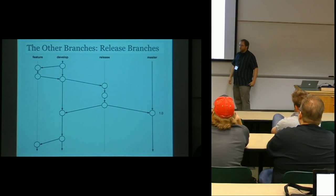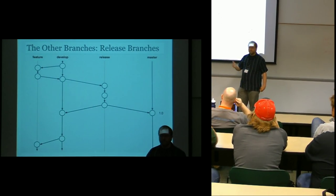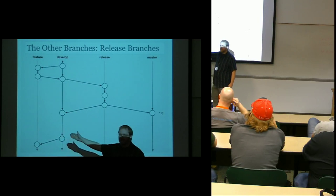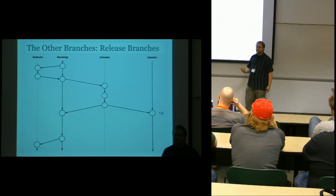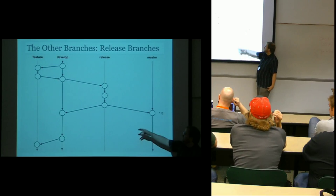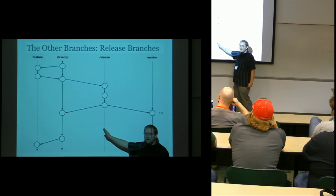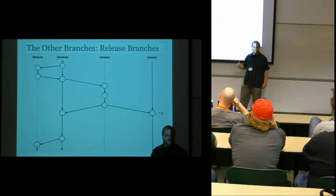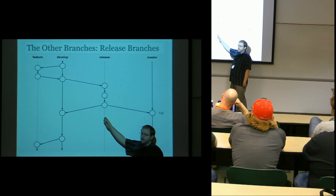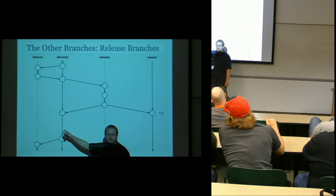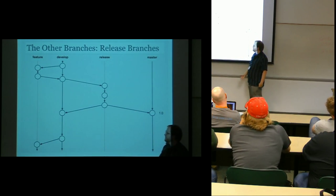Then there is the release branch. We've worked on our features and now we're ready to issue a release of our code. We establish a new release branch during the process of that release — this is when we test the code and make sure it's ready for release. There might be a couple commits along the release branch. When we're done and sure the code is stable and ready for deployment, we take the changes and it splits: the master branch gets everything tagged with a release tag, and any changes made get merged back into develop so develop stays in sync.